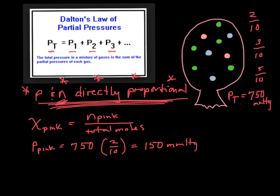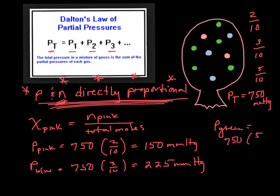The partial pressure of this blue gas is 750 times three-tenths, or 225 millimeters of mercury. And the partial pressure of the green gas is 750 times five-tenths, or half of it, so that's going to be 375 millimeters of mercury.